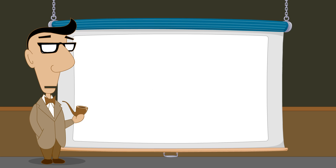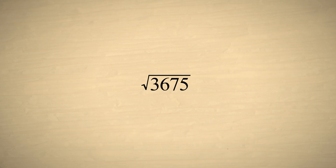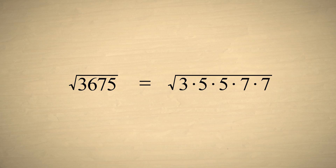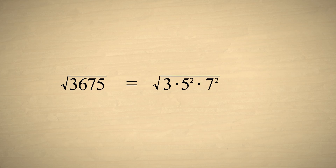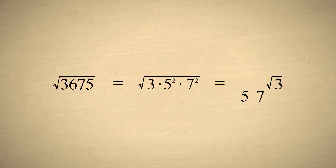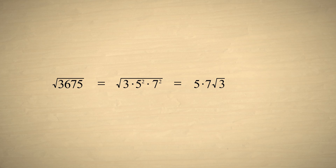For instance, let's say we want to simplify the square root of 3675. To find out if this number contains any perfect square factors, we can first factor the number into all its prime factors. Doing this, we get 3 times 5 times 5 times 7 times 7, or 3 times 5 squared times 7 squared. We can then bring the square roots of 5 squared and 7 squared out from under the radical sign and write the expression as 35 times the square root of 3.